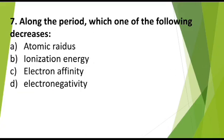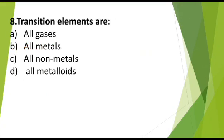Option number 7. Along the period which one of the following decreases: a) Atomic radius, b) Ionization energy, c) Electron affinity, d) Electronegativity. Correct answer is atomic radius.